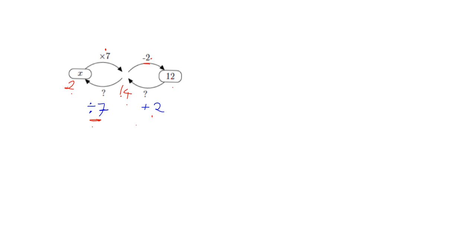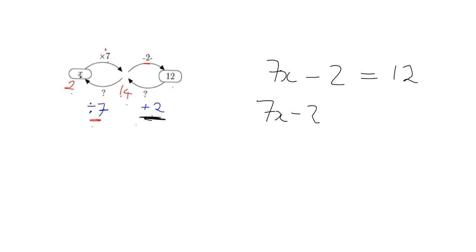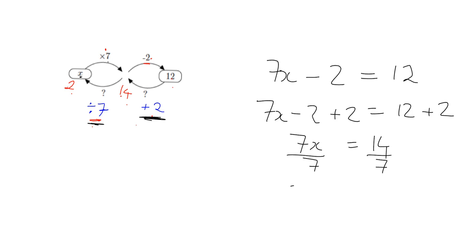How does this relate to what we know about how equations work? The equation is 7x minus 2 equals 12. First, we get rid of the subtracting 2 by adding 2 to both sides — we invert it — and what we do to one side we do to the other because we're fair in equations. So we get 7x equals 14. Next, we undo the multiplying by 7 by dividing both sides by 7, and we get x is equal to 2.